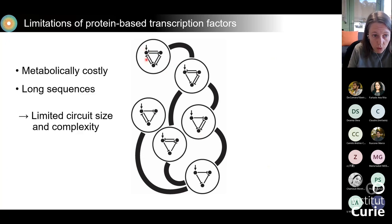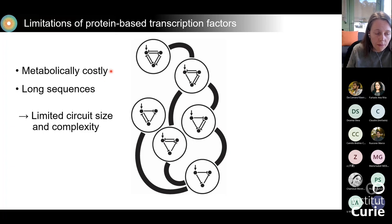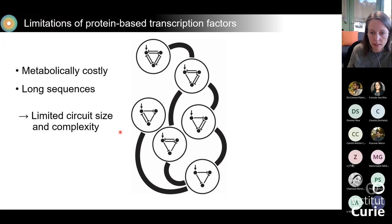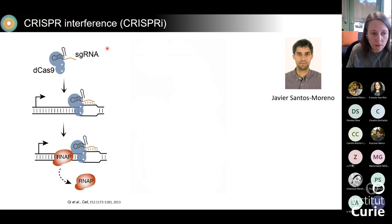Expressing protein-based transcription factors is metabolically costly for E. coli cells — if we stressed them too much they wouldn't behave predictably anymore. Also, the sequences of transcription factors are rather long, so having many of them requires using multiple plasmids, again limiting circuit size and complexity. So we were looking for an alternative solution and found it in CRISPRi.